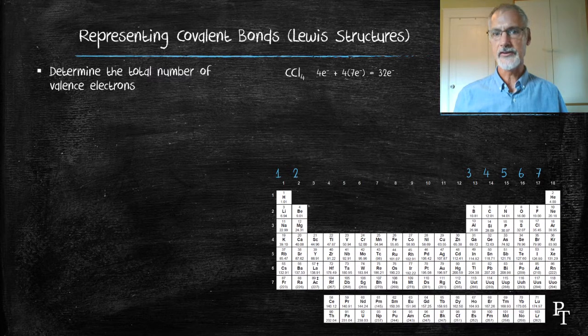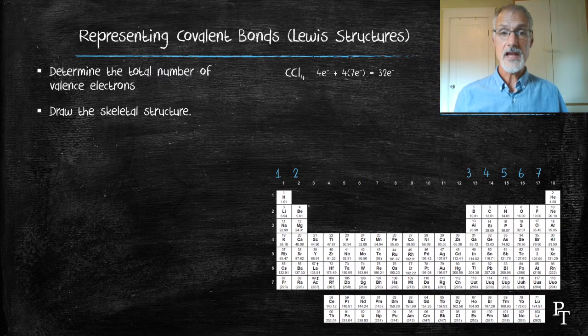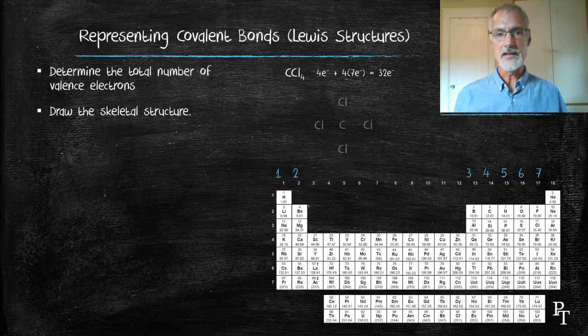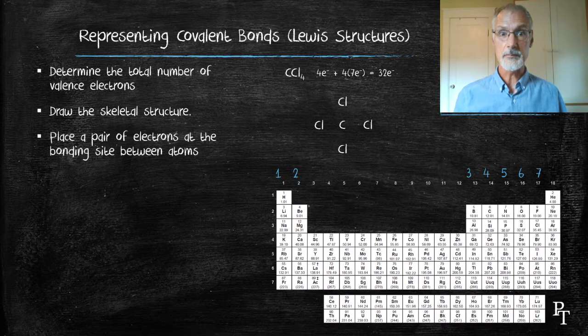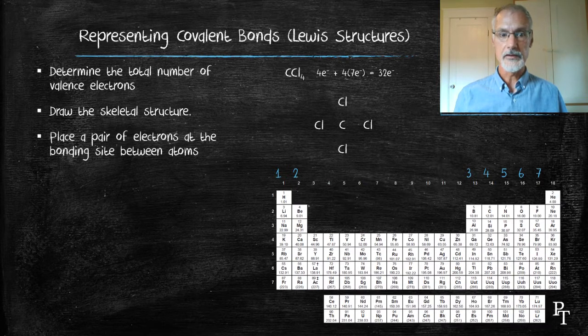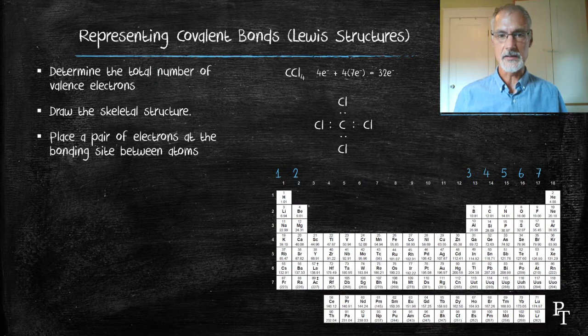I now draw what's called the skeletal structure. To do that, I place the atom there's fewest of in the middle and then the other atoms around the periphery. I begin by placing the electrons at the bonding sites, and I do that by placing them in pairs. Those are called the bonding electrons.